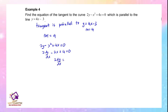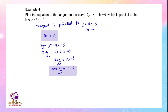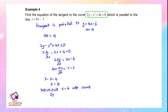Simplifying: 2(dy/dx) = 2x - 4, so dy/dx = x - 2. Comparing to m = 4: x - 2 = 4, therefore x = 6. Substituting x = 6 into the curve: 2y - 36 + 24 = 0, so 2y = 12, giving y = 6. The point is (6, 6).